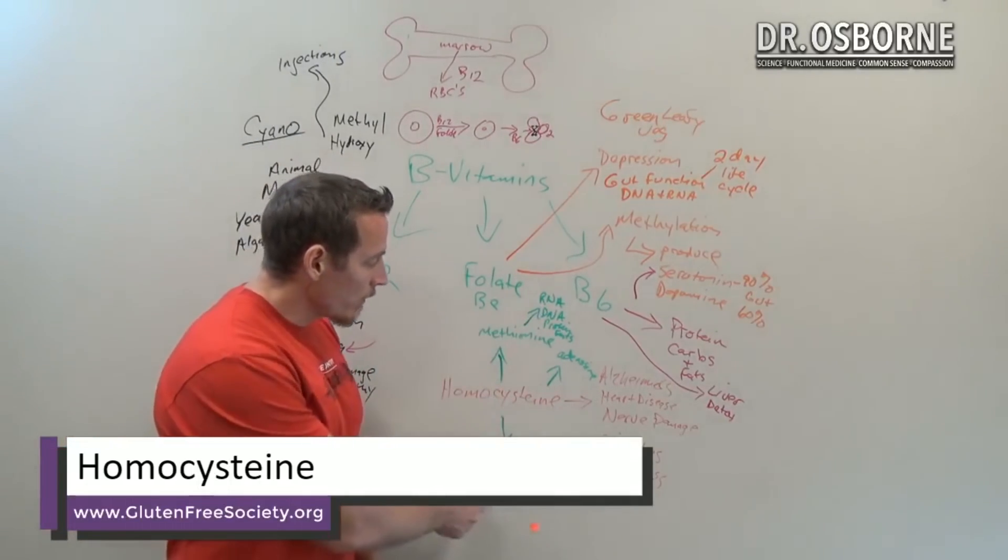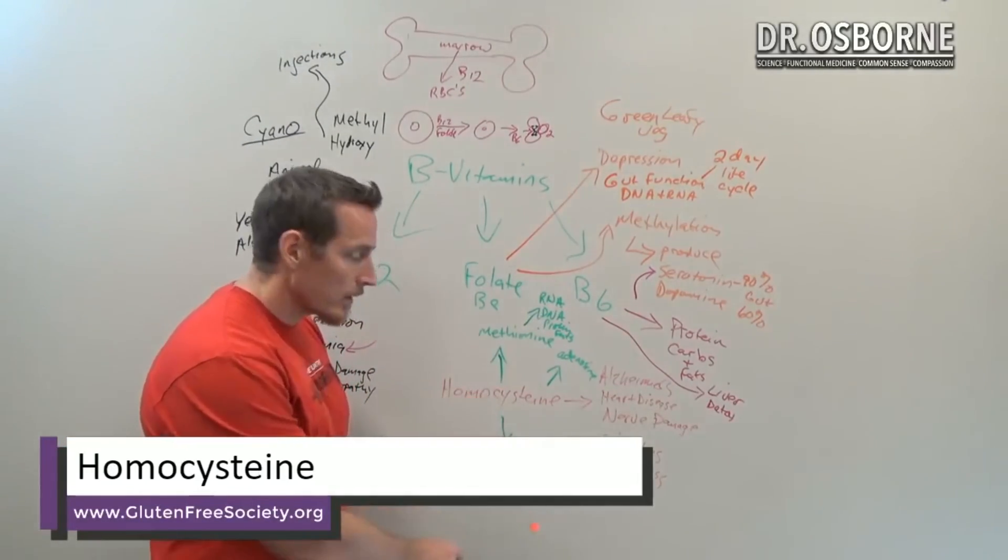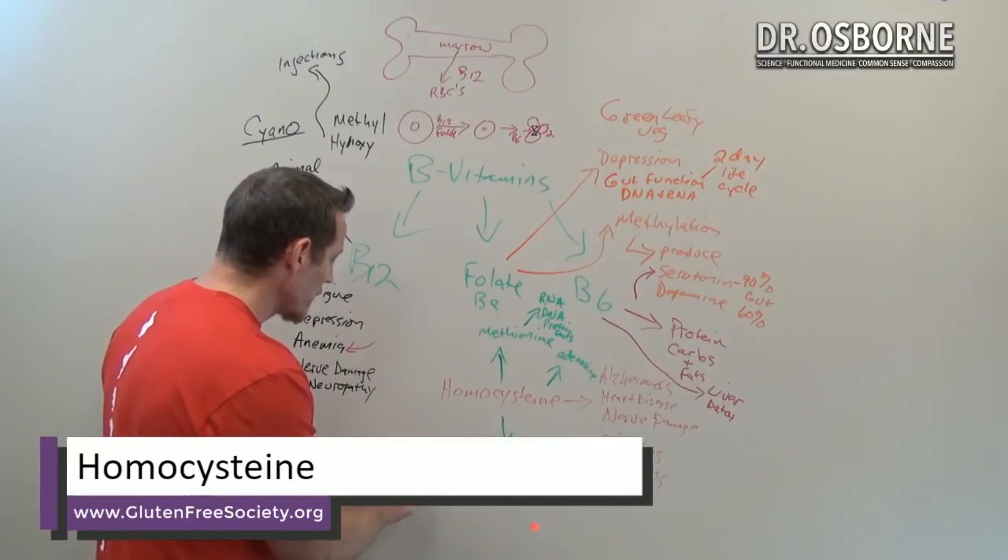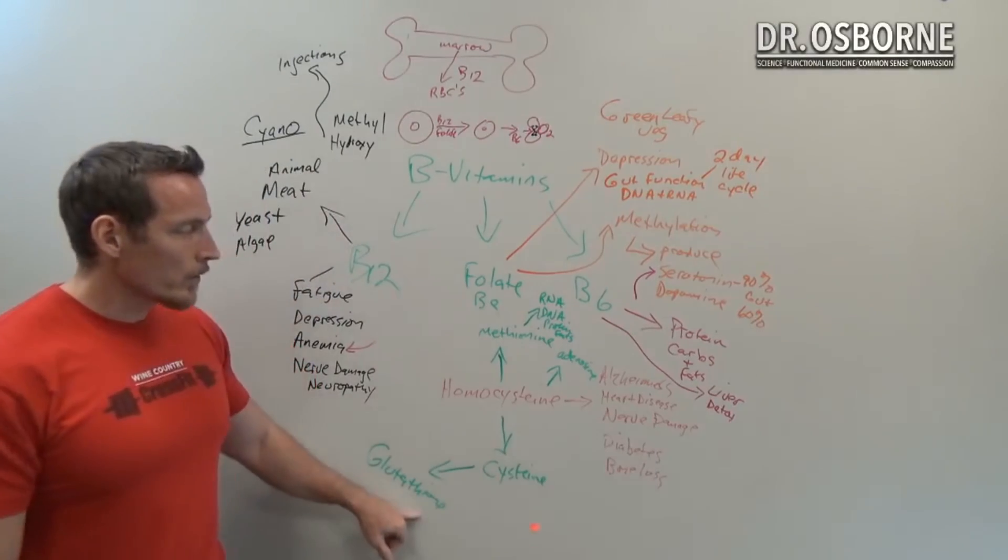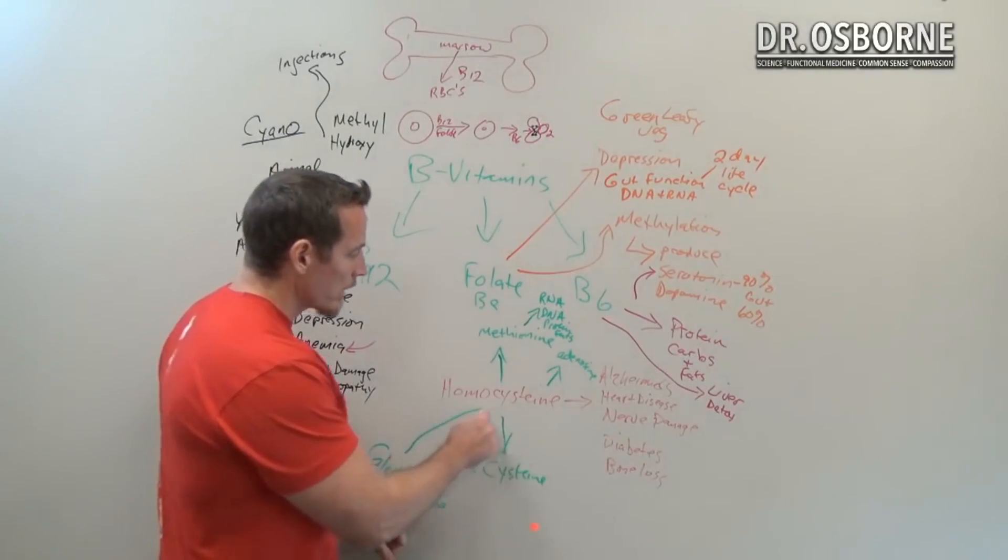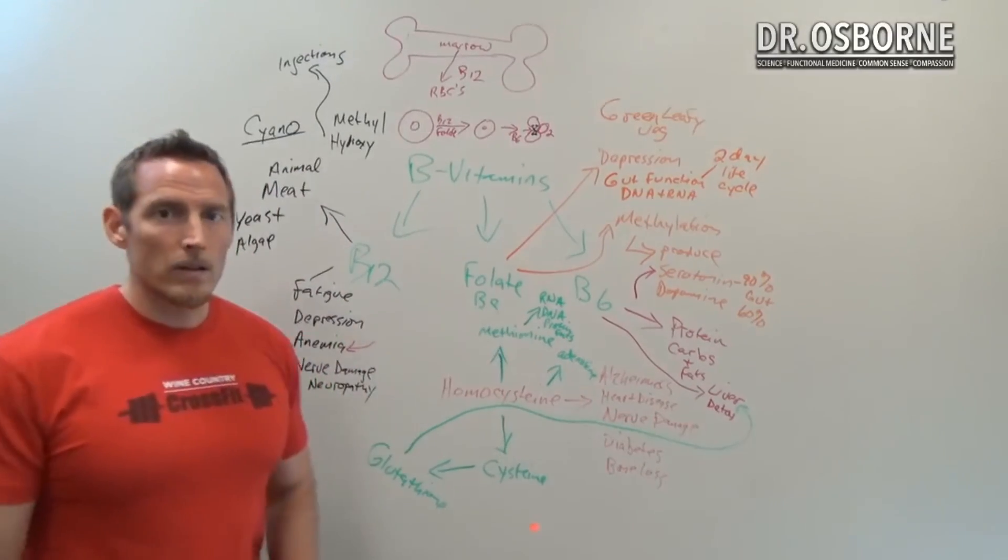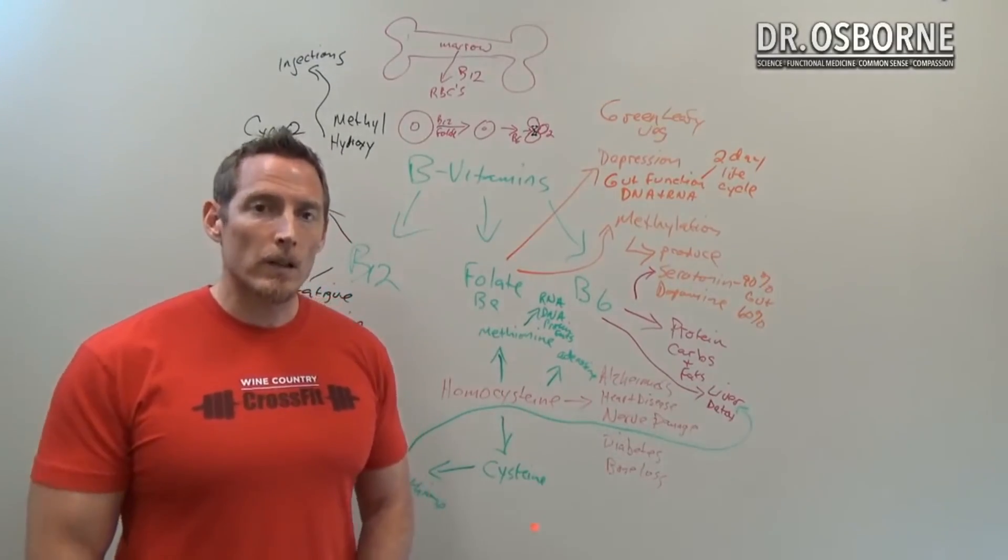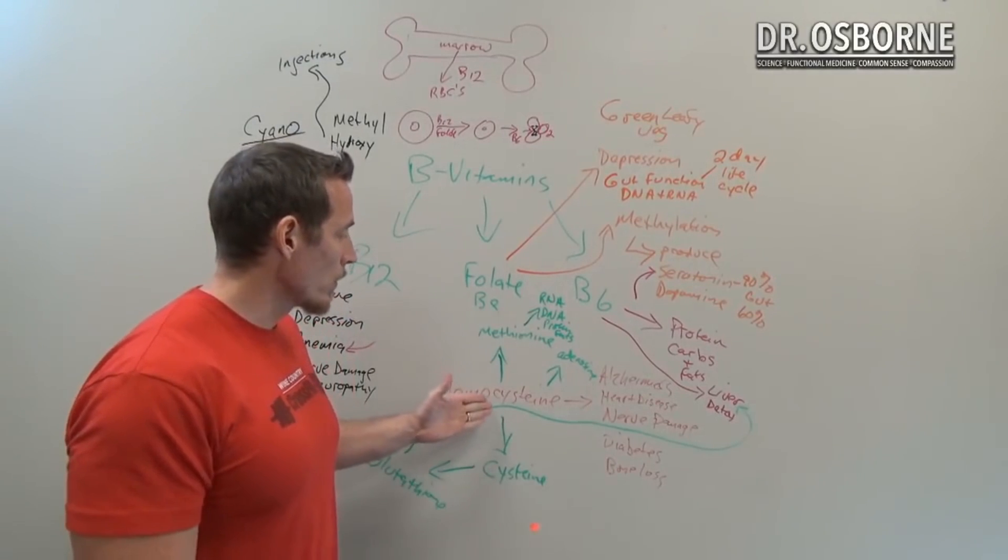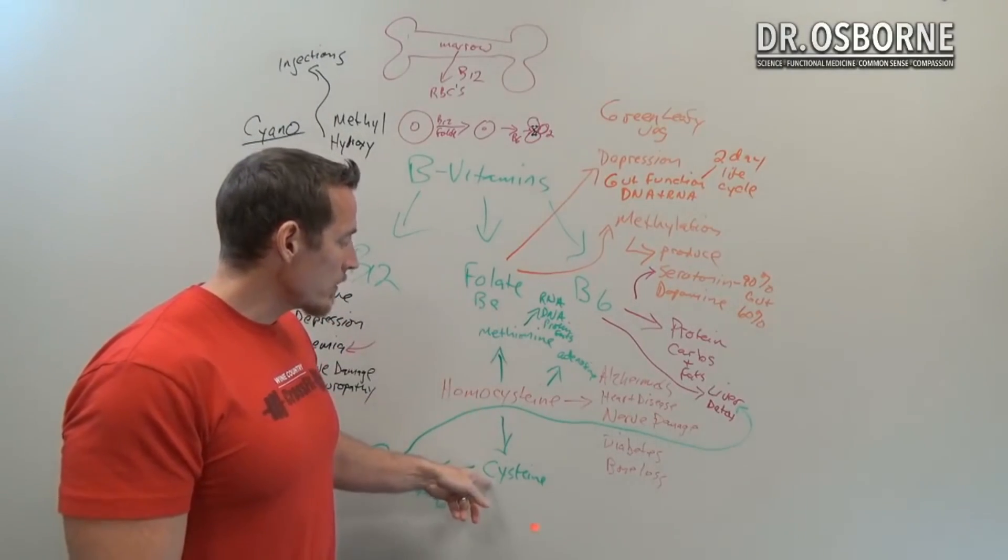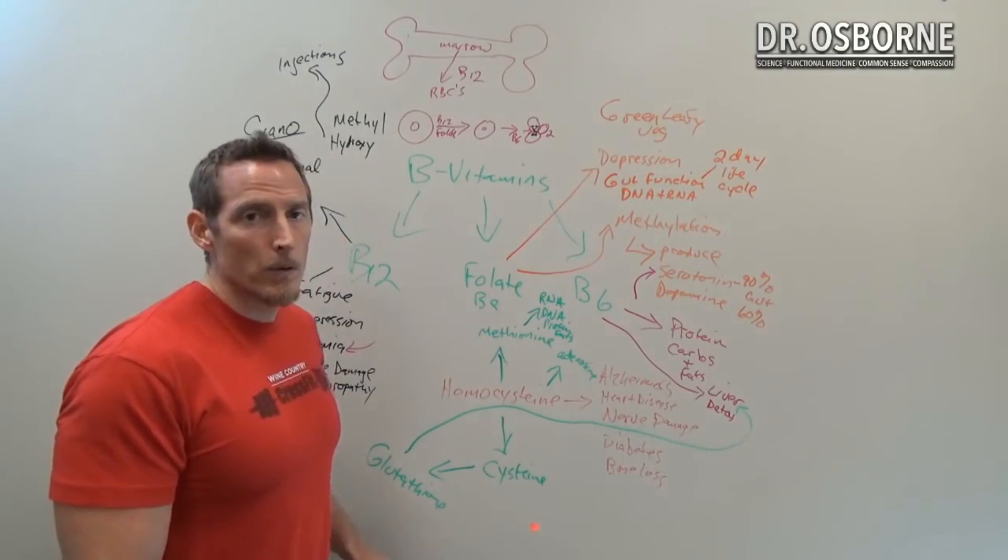One of the other ways we get rid of homocysteine is through converting it to cysteine, and then subsequently into a substance called glutathione. Now you've probably heard of glutathione before. Glutathione is what the liver uses for detoxification. So coming back over here, think of glutathione as the master antioxidant for liver detoxification.